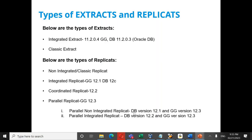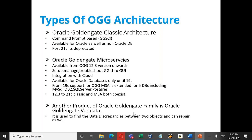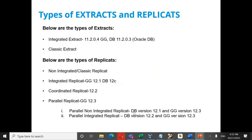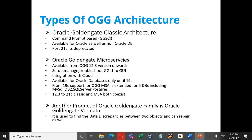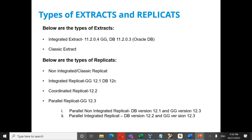To summarize the architecture: classic architecture and microservices architecture both support the same types of extracts — integrated and classic — and the same types of replicates. Microservices is a type of architecture; integrated is a type of extract or replicate. If asked in an interview: microservices is type of architecture, integrated is type of extract and/or replicate.